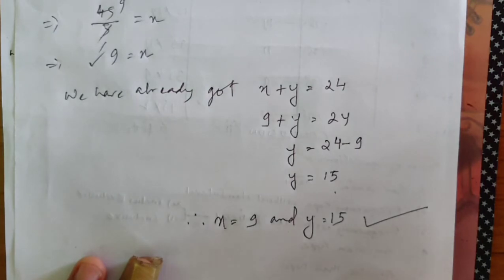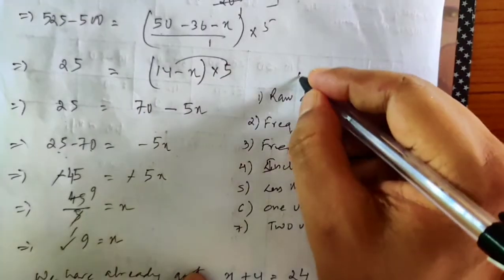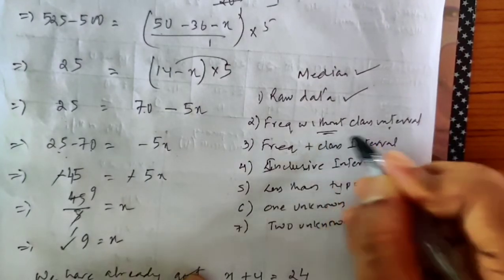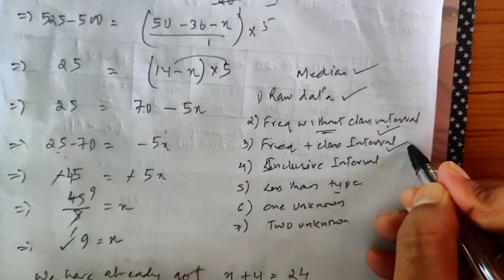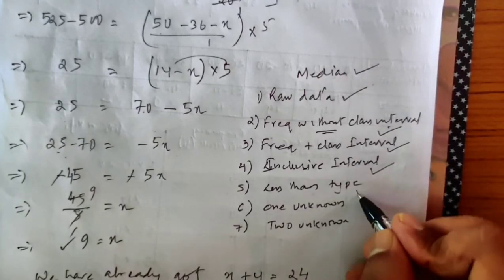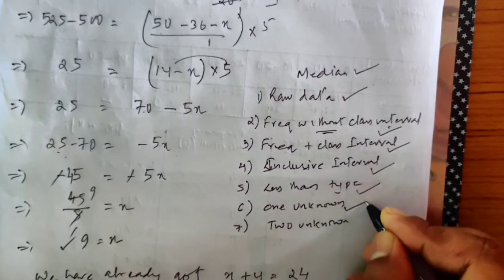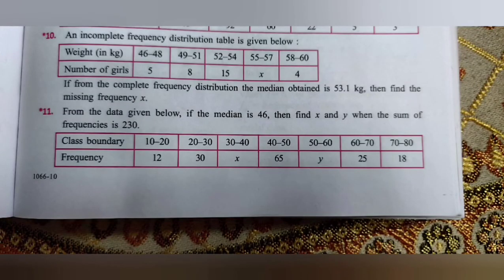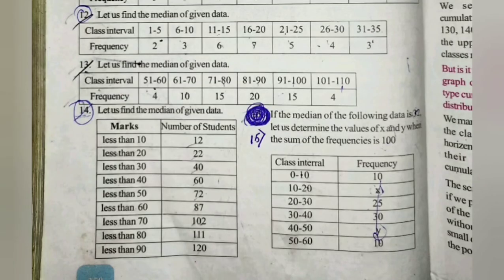Quick recap of what we've covered in median: raw data type, frequency without class interval, frequency with exclusive class interval, inclusive interval, less-than type, one unknown, and two unknowns — that's the whole package for median. Do a few questions as homework. For question 10, x = 10; for the next, x = 34 and y = 46. Also do questions 12 to 15 from your board's book. Stay home and stay safe.